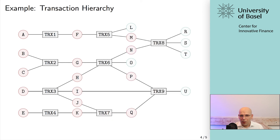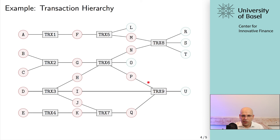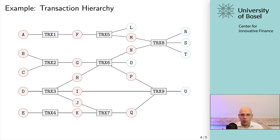With our last examples: M and N as inputs in transaction eight create R, S, T as newly created UTXOs. And P, I, and Q are used as inputs in transaction nine to create U. That's basically the system — the transaction graph. That is how you can assume value from a previous unspent transaction output and create new ones with your very own unlocking conditions.